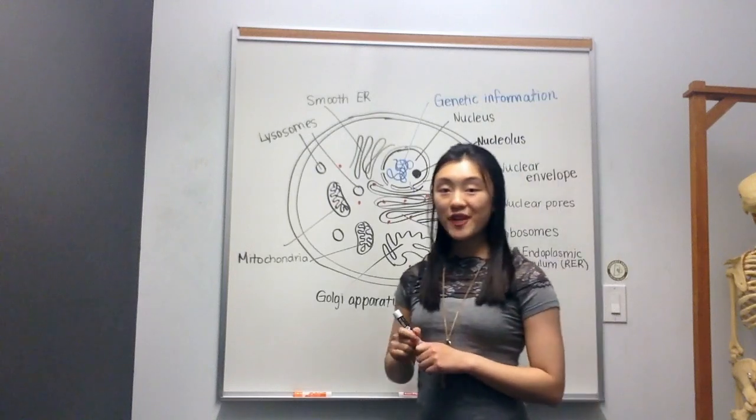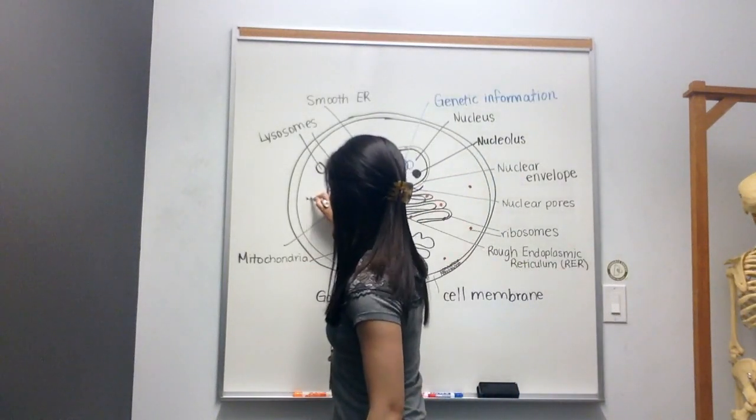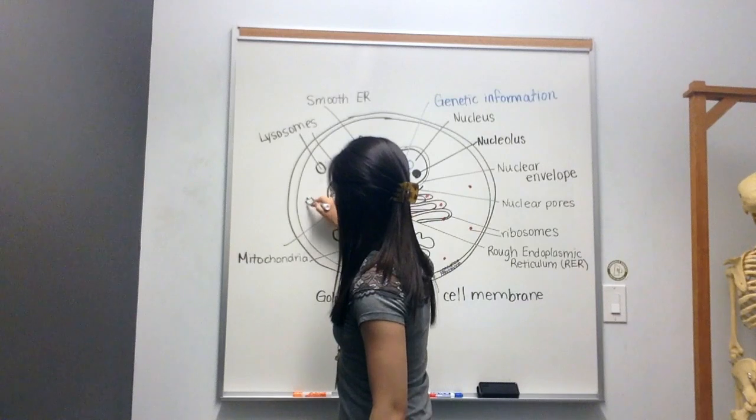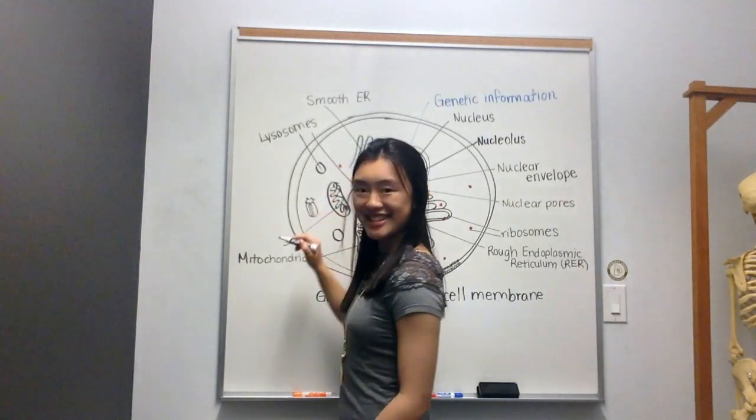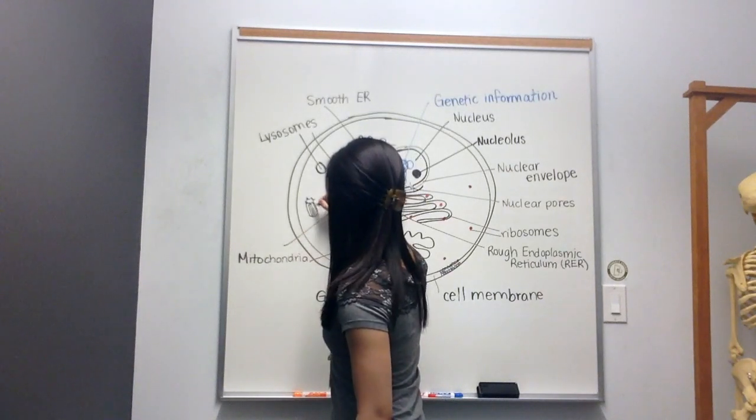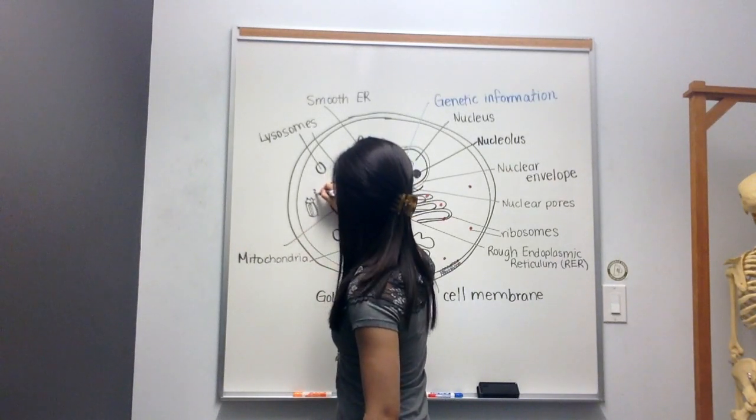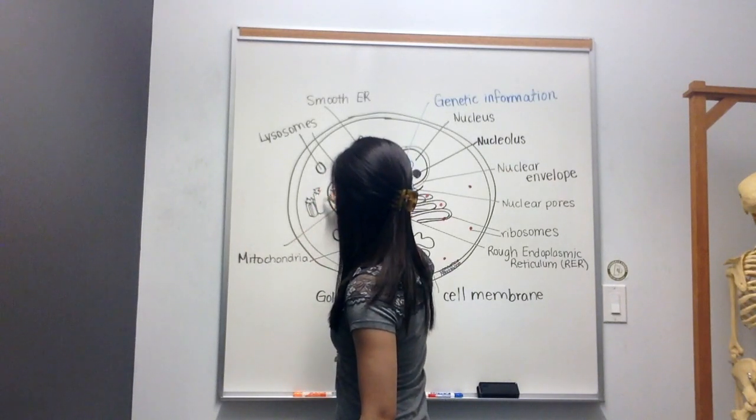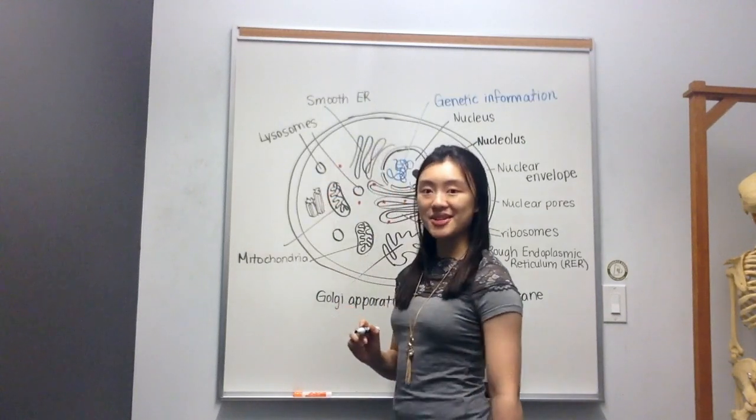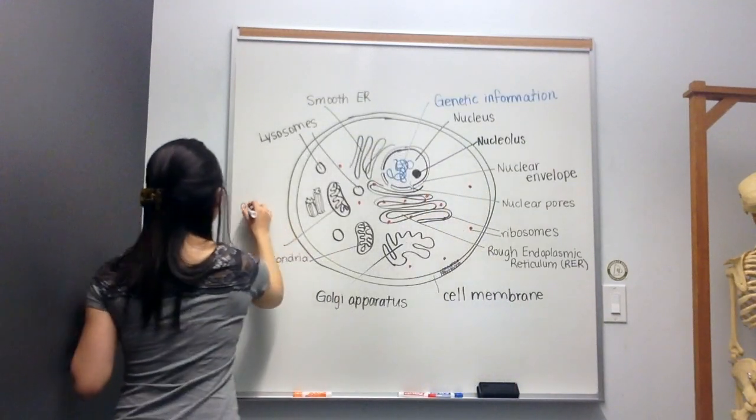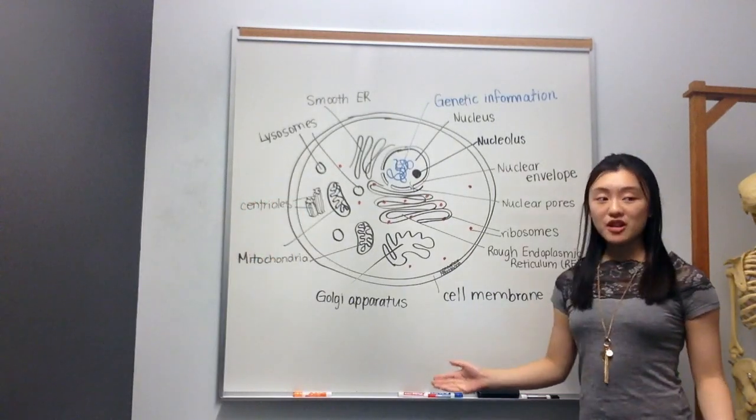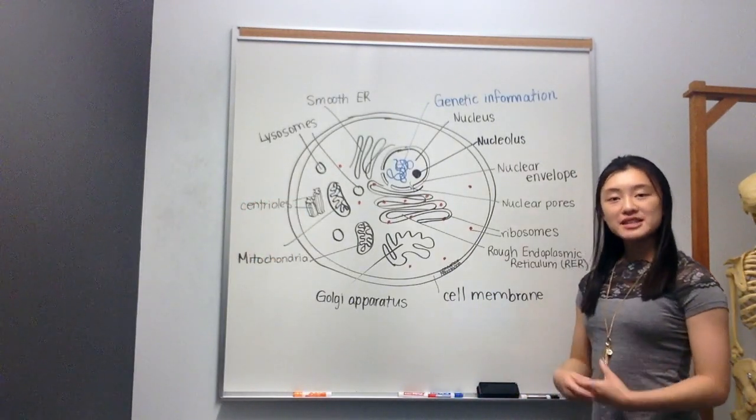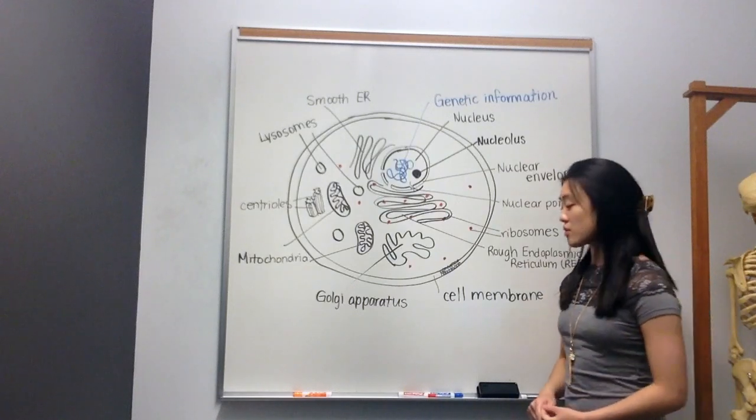You will also find another organelle that looks a bit like a star and a tube. So it's like a cylindrical star hybrid thing. And we call these centrioles. Normally you'll find a pair of centrioles, and they look like so. So I'll label that here, centrioles. That's it for all of the organelles. Now let's go into a little bit more detail about their roles and responsibilities.